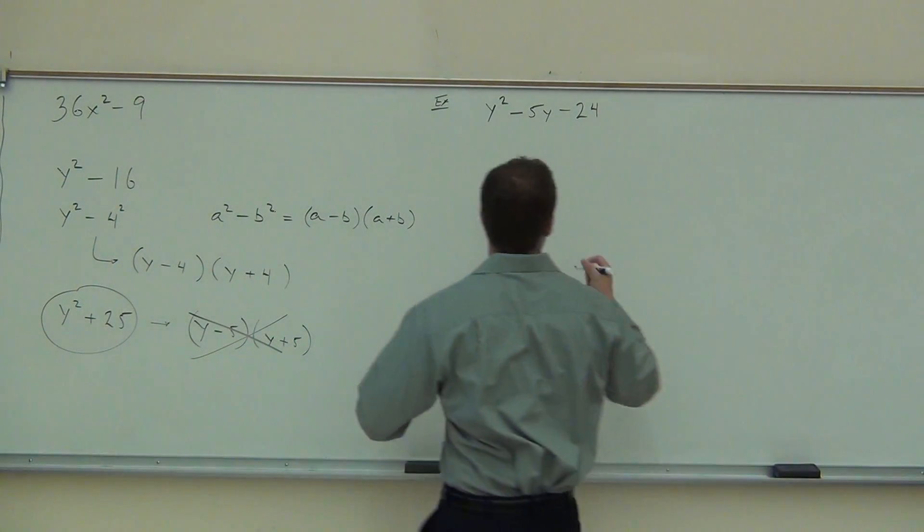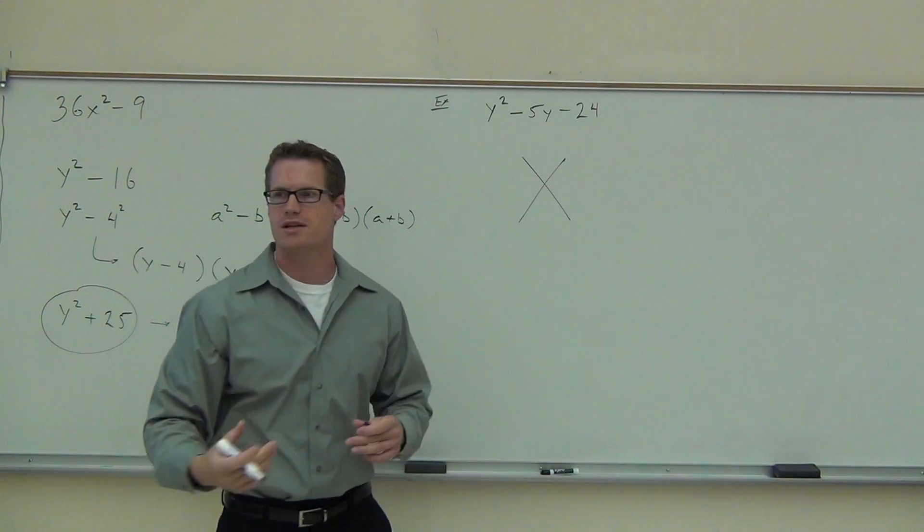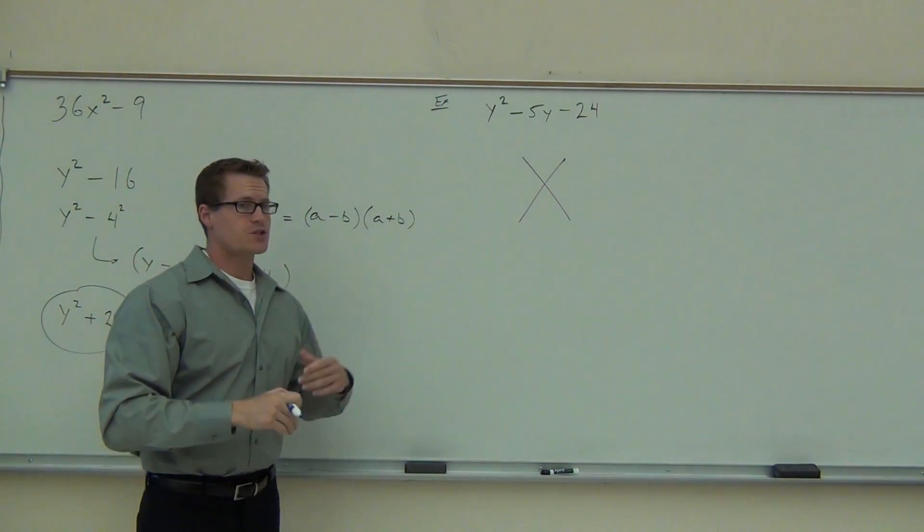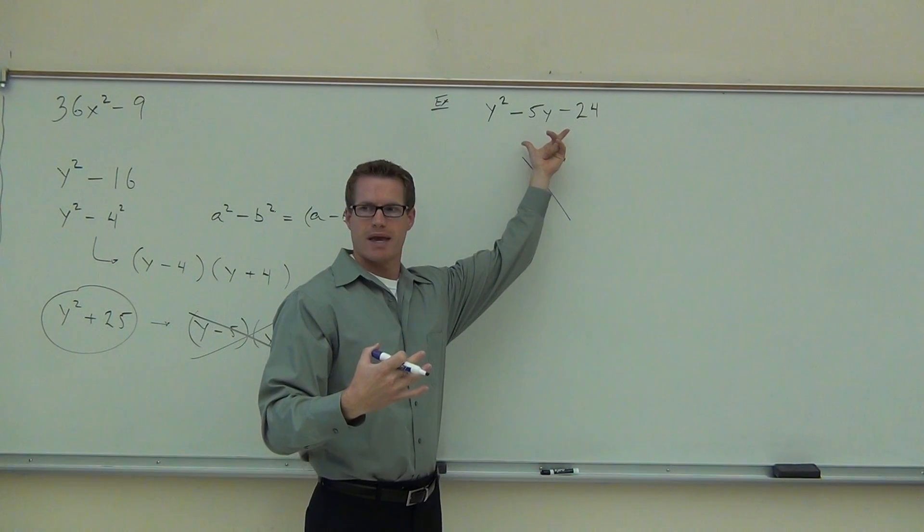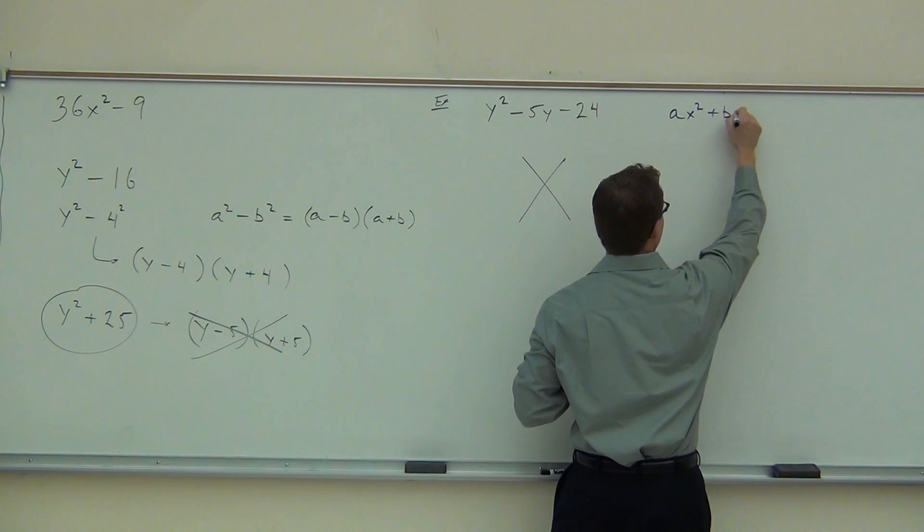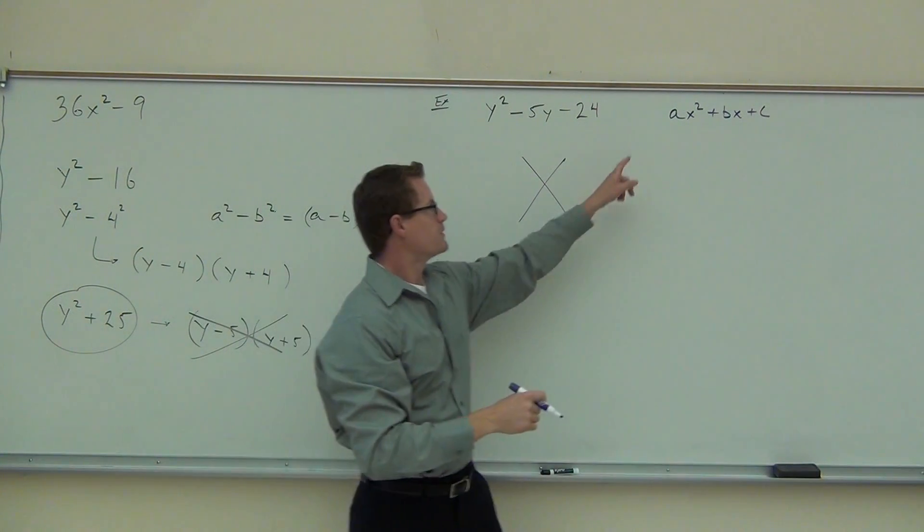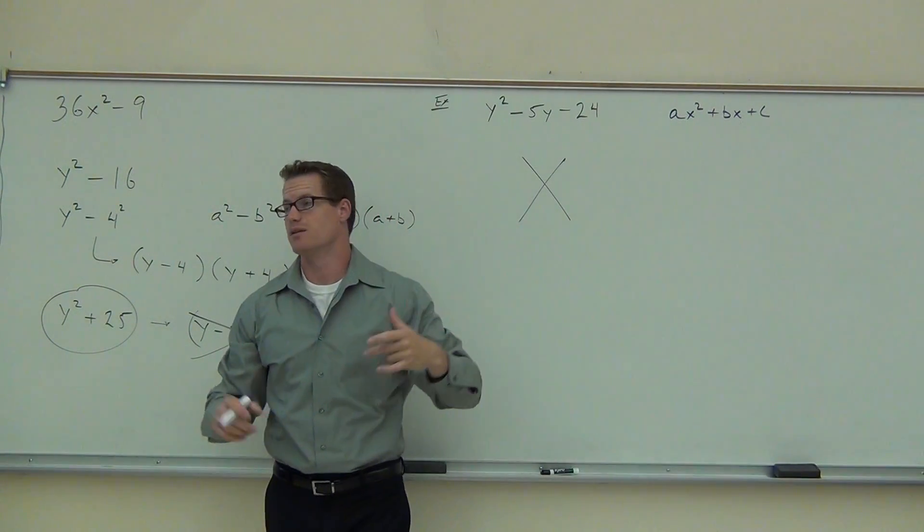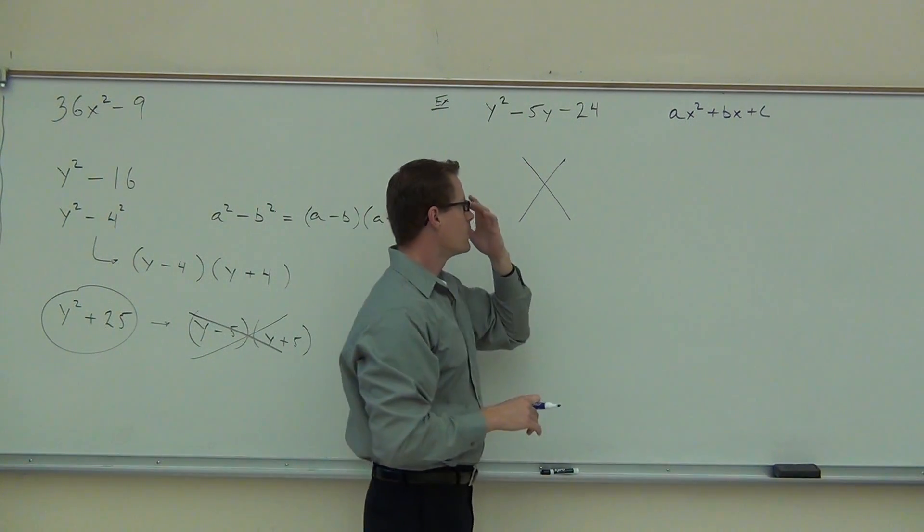Here we go. So diamond method, what you do is you create, it's really not a diamond, it's like an X. It's really just a graphic organizer that helps you organize these numbers in a way that you can see them. Here's what we do. First thing I've got to tell you is every single trinomial, that's just a three-term polynomial like we have here, is of the form AX squared plus BX plus C. Have you ever seen that before? Here's the cool thing. These right here, these numbers are called coefficients, and we're going to be able to use those to help us factor.